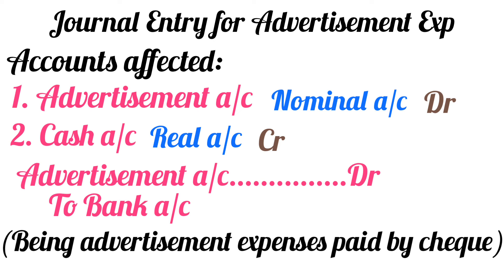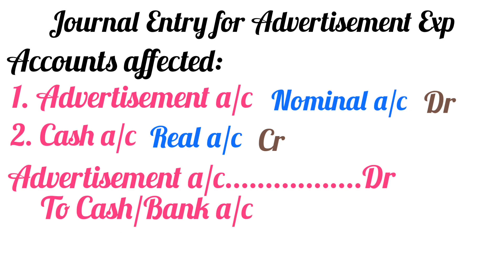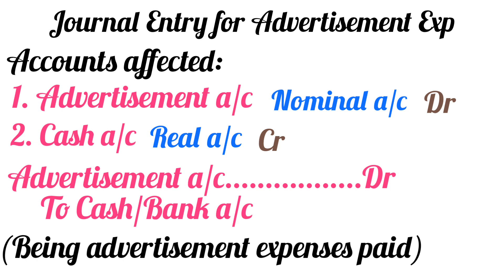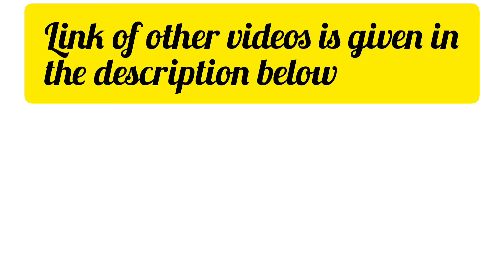In case you are not sure whether the amount has been paid by cash or by check, you can write the journal entry as: Advertisement Account Debit to Cash/Bank Account. The narration in that case would be 'Being advertisement expenses paid.'